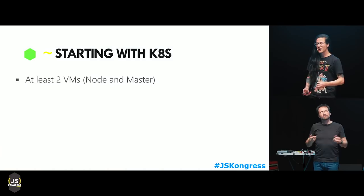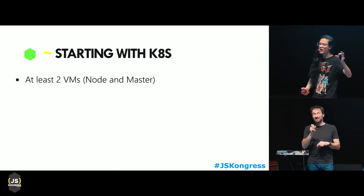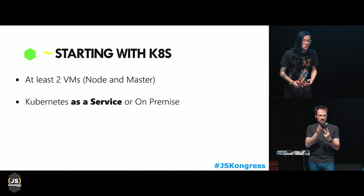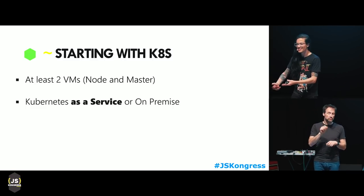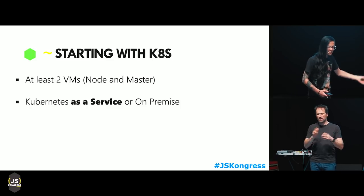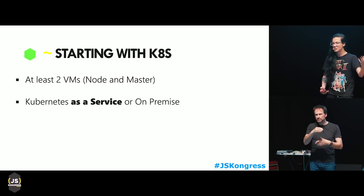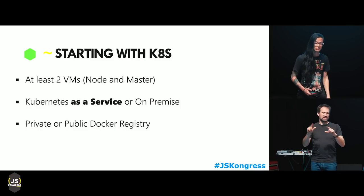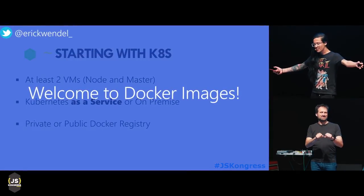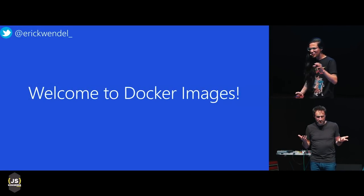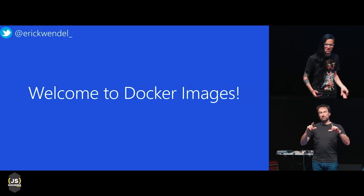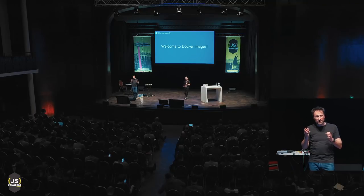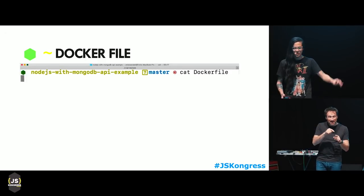How do you start with Kubernetes? In my opinion, you can start with at least two VMs — one for master, one for a node — on a Raspberry Pi, a local machine, or a cloud service like Azure, Digital Ocean, or Google Cloud. All of them have Kubernetes offerings. You also need a Docker registry, public or private. Welcome to Docker images — no more copying and pasting files to production. You work with images instead.